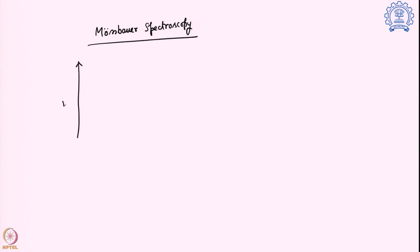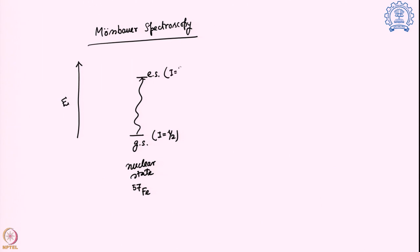In Mössbauer Spectroscopy, like any other spectroscopy, we have a particular change in state. Here the change we observe is from the ground state to an excited nuclear state. Taking the example of Iron-57 — our most familiar example — the ground state nuclear spin of I = 1/2 goes to I = 3/2.